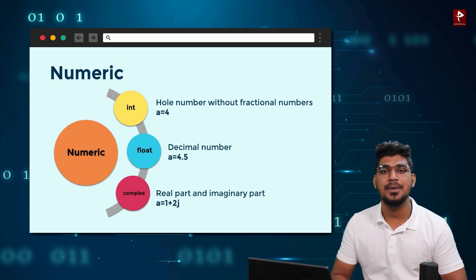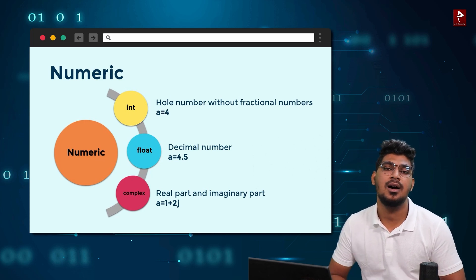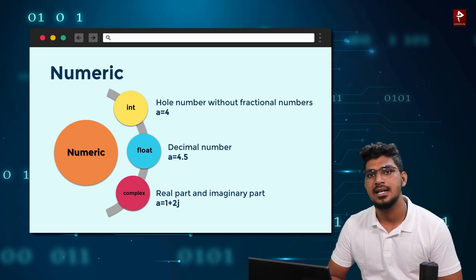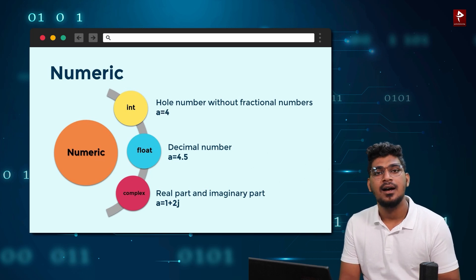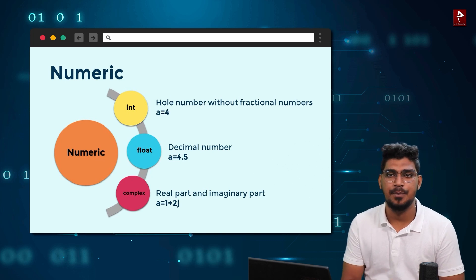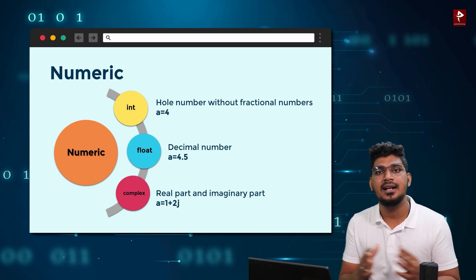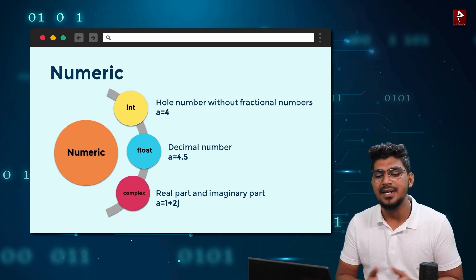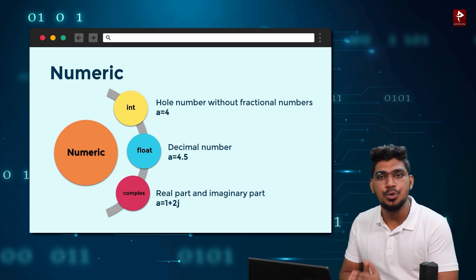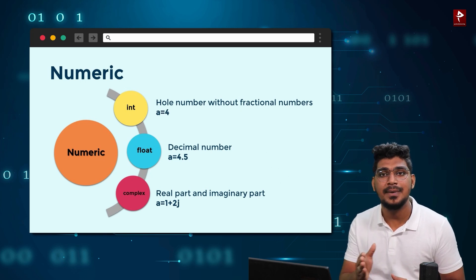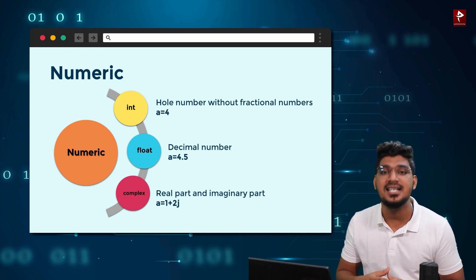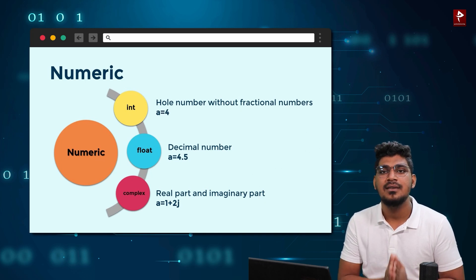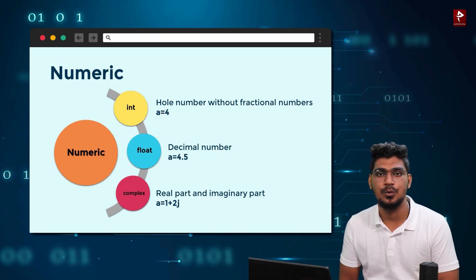Next, Complex number. It consists of two different parts — real parts and imaginary parts. You have to learn numerical mathematics. For example, a is equal to 1 plus 2j. The 2j is the imaginary part, and the real part is the number without the imaginary character. This is called the complex numbers.